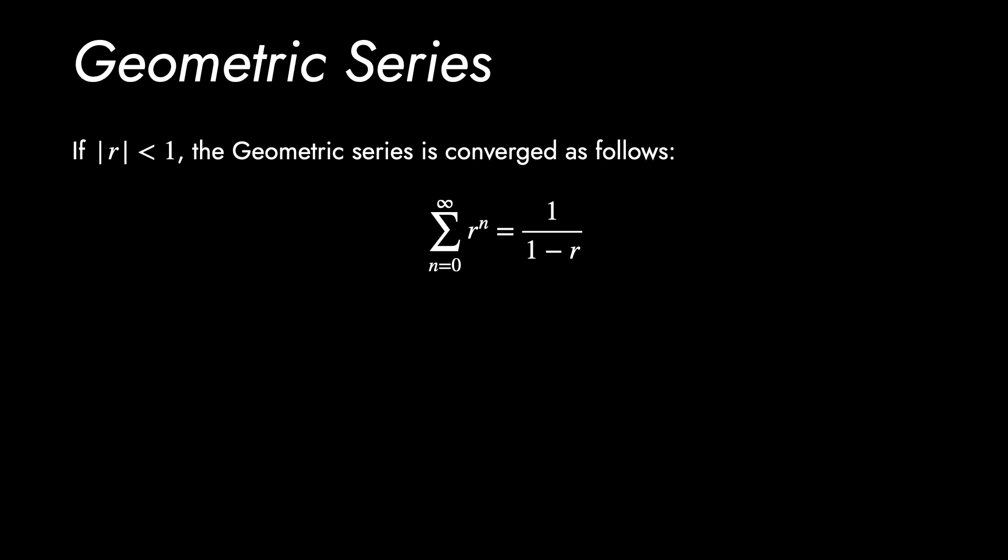If the ratio is bounded by 1, the infinite geometric series is converged. The proof is simple, which may be learned in high school.